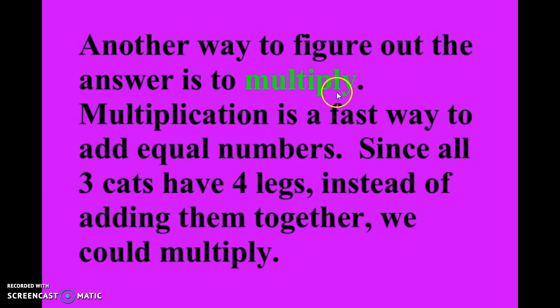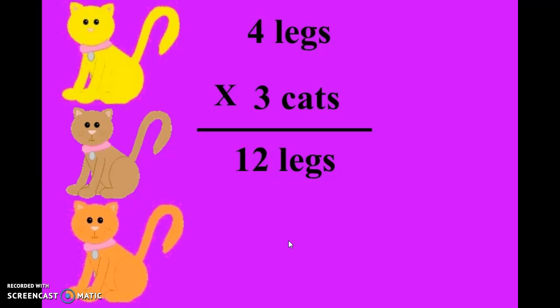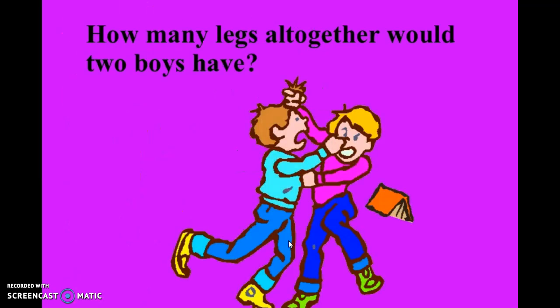This is a complicated way of learning how to multiply. Another way to figure out the answer is to multiply. Multiplication is a fast way to add equal numbers. Since all three cats have four legs, instead of adding them together we could just multiply three times four — three cats, four legs — and your answer would still be twelve legs.